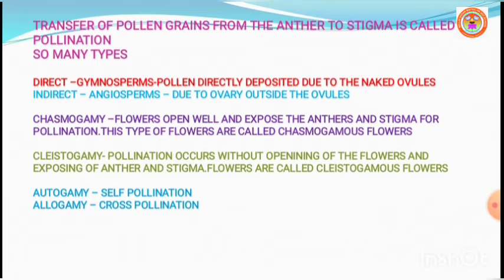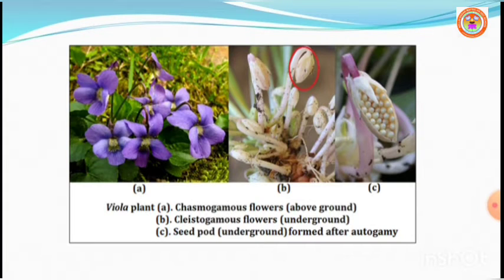Now, coming to the types of pollination. Based upon the flower on which the pollen of a flower reaches, pollination is classified into two types. One is self-pollination, also called autogamy — 'gamy' means union or marriage. The other is cross-pollination, also called allogamy.